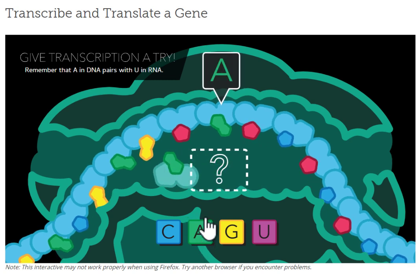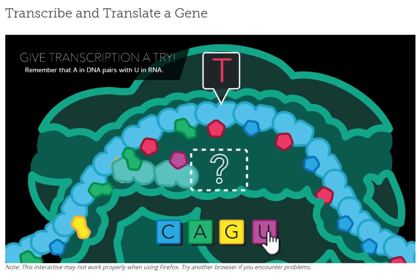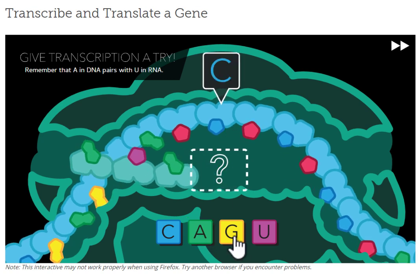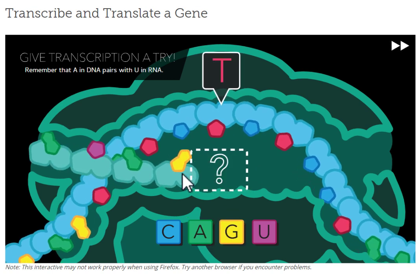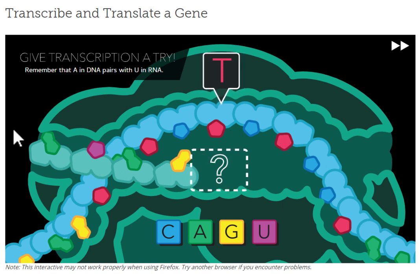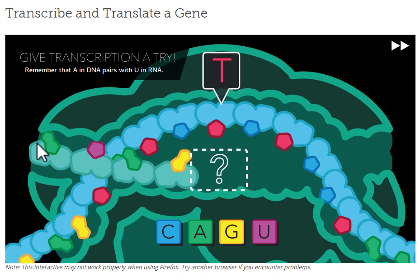So T pairs with an A, A pairs with U, A again, it's a C, it's a G, and so on and so forth. But you see right here, this is your mRNA strand. So as you're going through this whole thing, this is the mRNA strand that you need to write down.